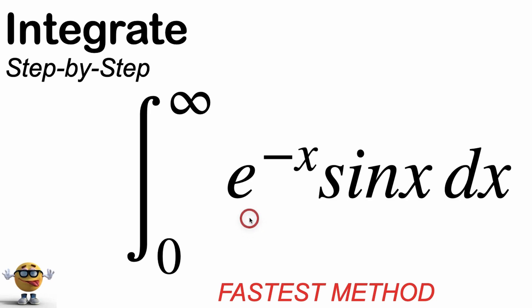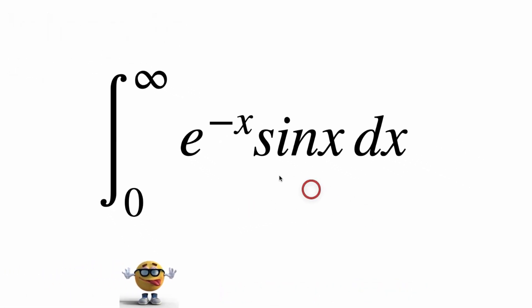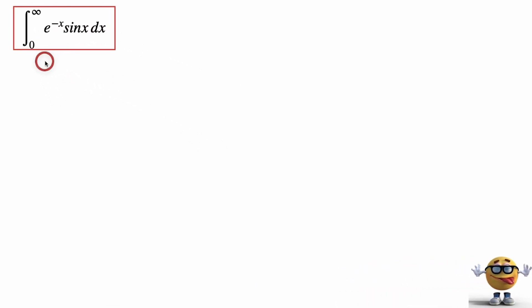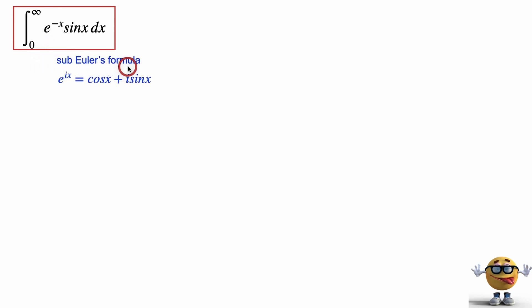We're going to evaluate the integral of e to the negative x times sine of x using an easy method — this is my favorite way. Normally we evaluate this using integration by parts twice, but this way we're going to use Euler's formula. Bear with me, trust me, this is way easier to work with.